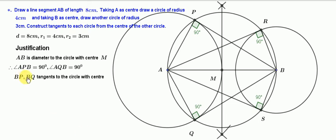Therefore, BQ and BP are tangents to the circle with center at A. Similarly, AR and AS are tangents to the circle with center at B.